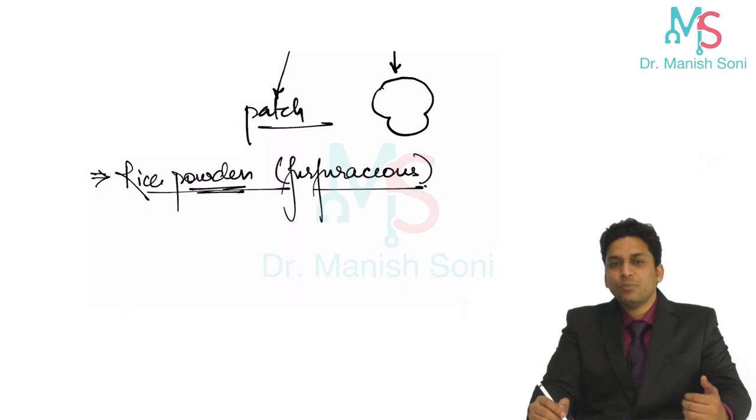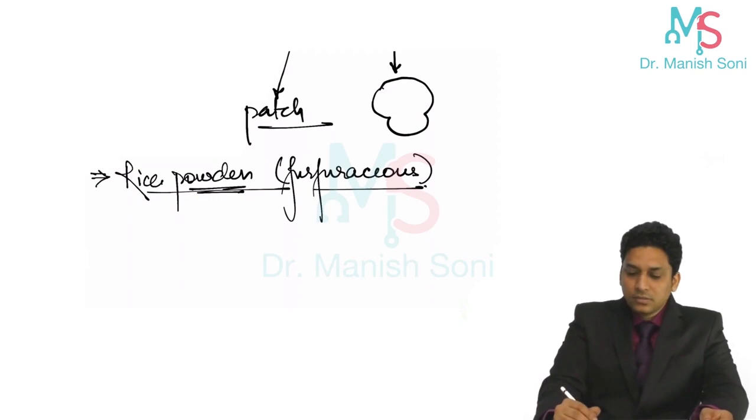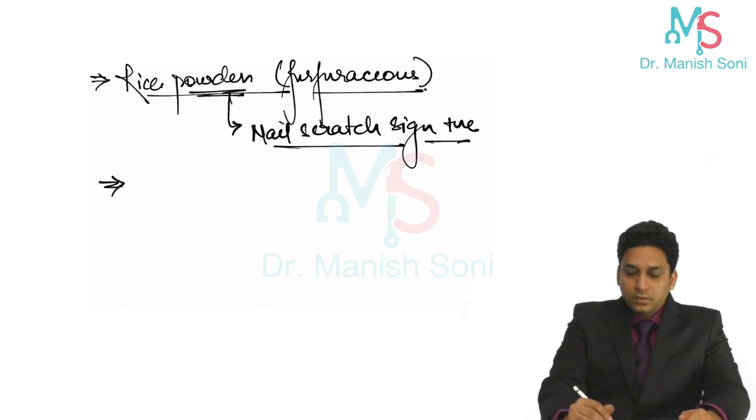Since this scale is very fine powder-like, sometimes it is not visible. If it is not visible, you simply need to scratch the lesion. When you scratch the lesion, these powdery scales come out. This is known as nail scratch sign positive.